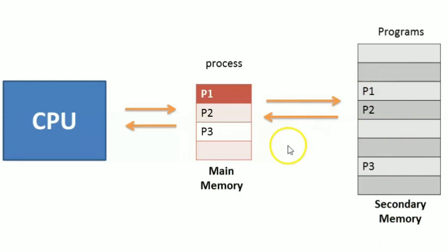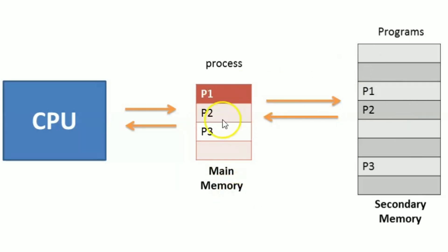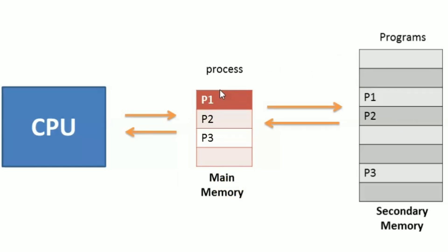At one time, three processes are executed — the first process, second process, and third process are executed. So the processes are executed and the memory allocates accordingly.